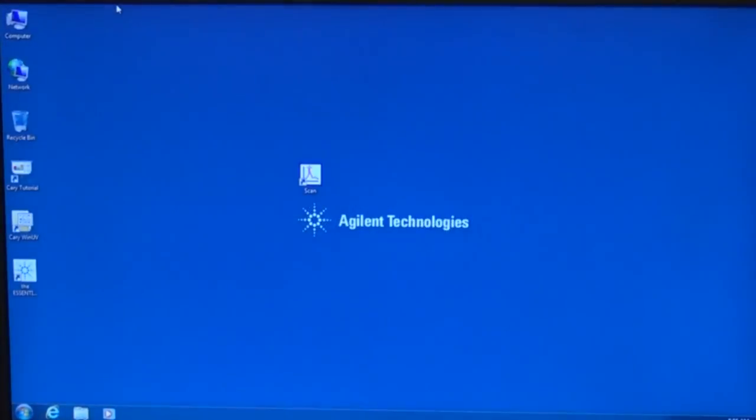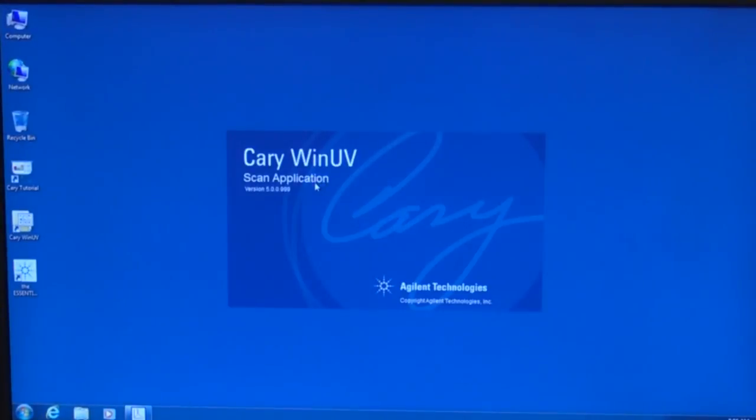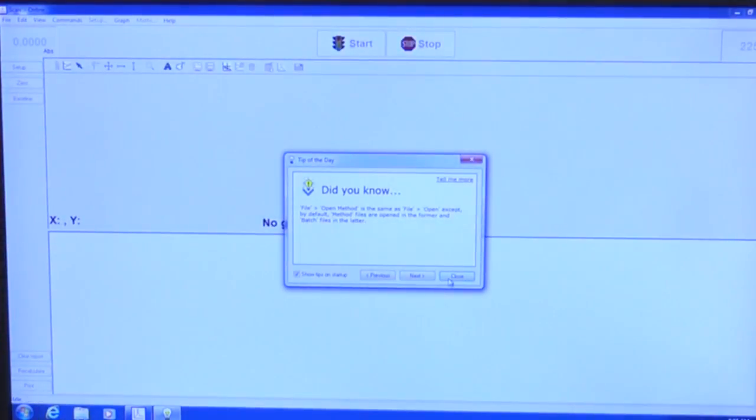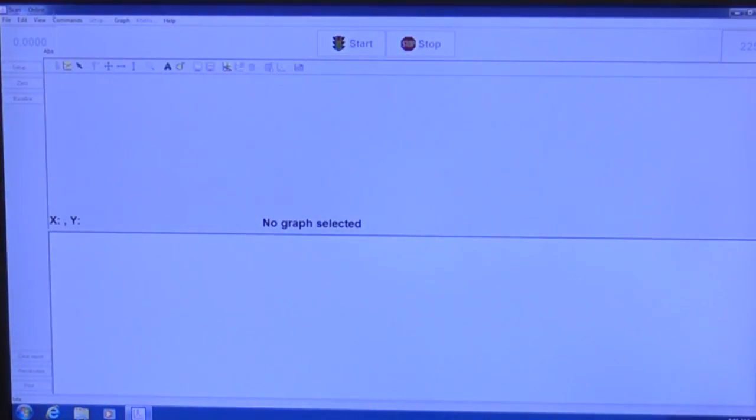Let's start by setting up the experiment on the computer. We'll go to the workstation computer and open the scan program, which is right on the desktop. Once you've got the program open, we'll need to set up the experiment to be sure that we're collecting across the proper wavelengths for this particular lab.